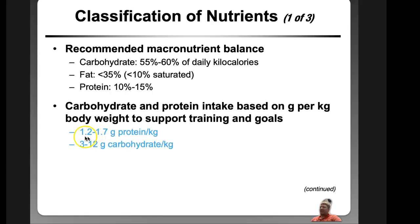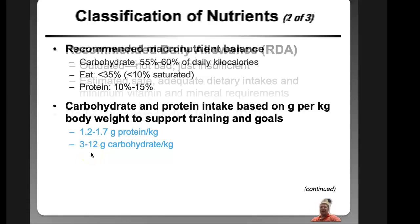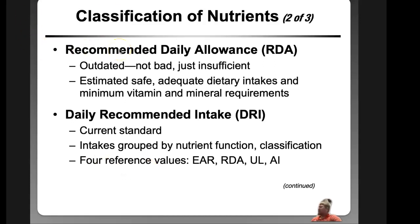The recommended protein intake is 1.2 to 1.7 grams per kilogram of your athlete's body weight. Carbs would be 3 to 12 grams per kilogram — those 12 grams would be for Olympic-level athletes like Michael Phelps or marathon runners. Most people will generally be on the lower end of that carb range. The RDA, or Recommended Daily Allowance, hasn't been used much in a while, but you might hear someone mention it, so just know it exists.